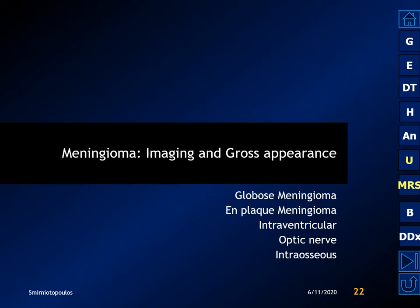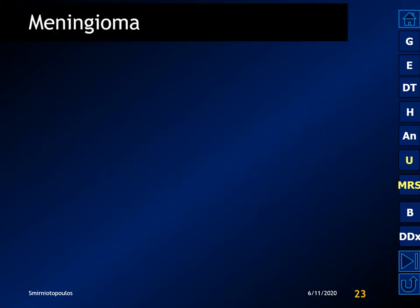Let's talk about the imaging and gross pathology appearance of meningiomas. Meningiomas may be globose, en plaque, they can be intraventricular, they can involve the optic nerve, and they can be intraosseous.